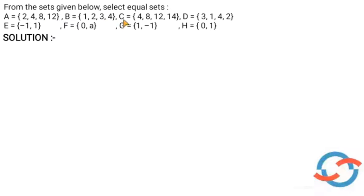Next is C. C is 2A. So A is equal to C. Then D: D has 2, then 4. But A is equal to D.